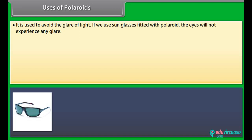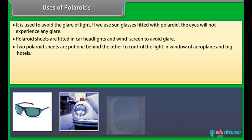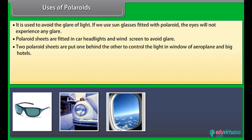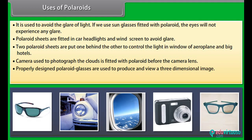Uses of polaroids: they are used to avoid the glare of light — sunglasses fitted with polaroid prevent eye glare. Polaroid sheets are fitted in car headlights and windscreens to avoid glare. Two polaroid sheets are placed one behind the other to control light in windows of aeroplanes and big hotels. Camera lenses are fitted with polaroid to photograph clouds. Properly designed polaroid glasses are used to produce and view three-dimensional images, and they are also used for studying optical properties of metals.